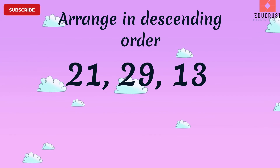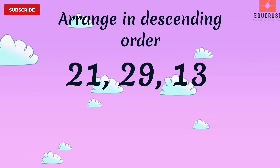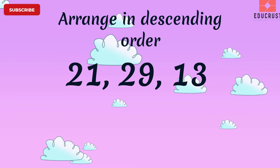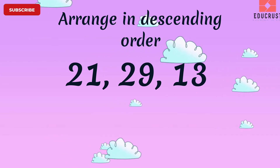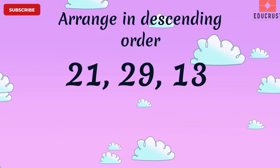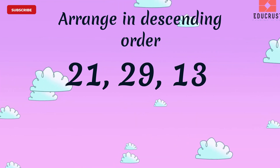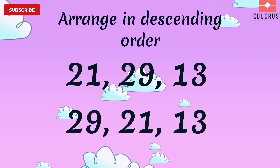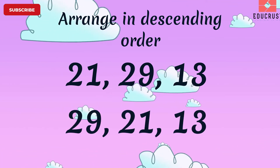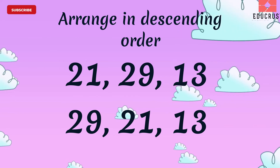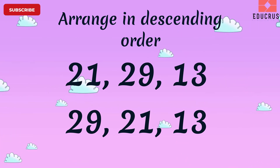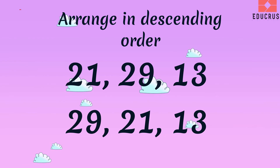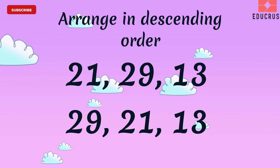Following the same pattern, as per our rule, 29 will come first, then 21 will come, and 13 will come in the end.